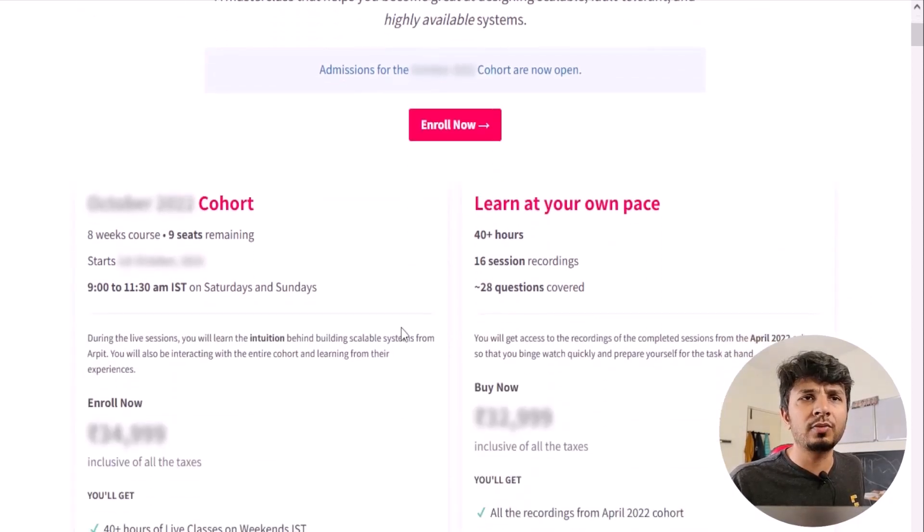So if you are looking to learn system design from the first principles, you will love this course. I have two offerings for you: the first one is the live cohort based course and the second one is the recorded offering. The live cohort based course happens once every two months and will go on for eight weeks while the recorded course contains the recordings from one of the past cohorts as is. If you are in a hurry and want to binge learn system design, I would recommend going for the recorded one.